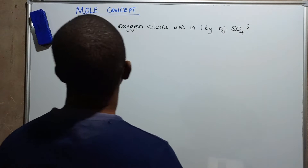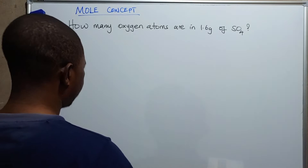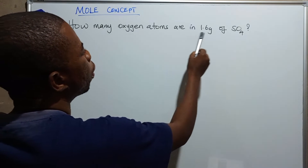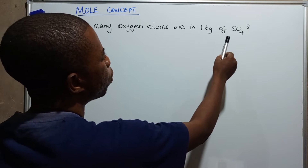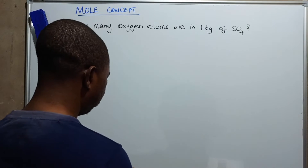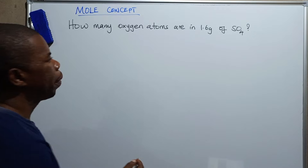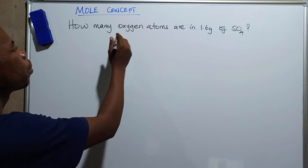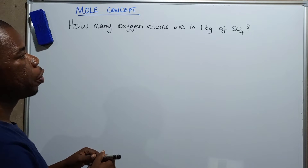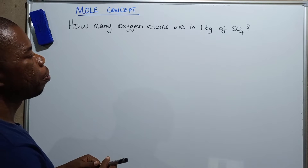The question says: how many oxygen atoms are in 1.6 grams of sulfur trioxide? When you look at this question it looks so simple, it looks as though it is straightforward, but it is quite tricky.